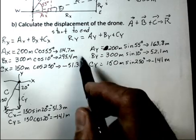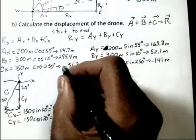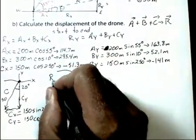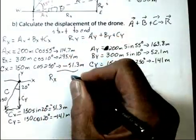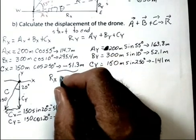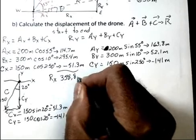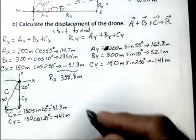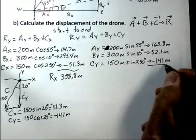Alright, let's go for R sub x and R sub y. Well, I have to, for R sub x, add up these values, keeping track of the minus sign that's here. And I get 358.8 meters. Again, we're rounding a little bit.